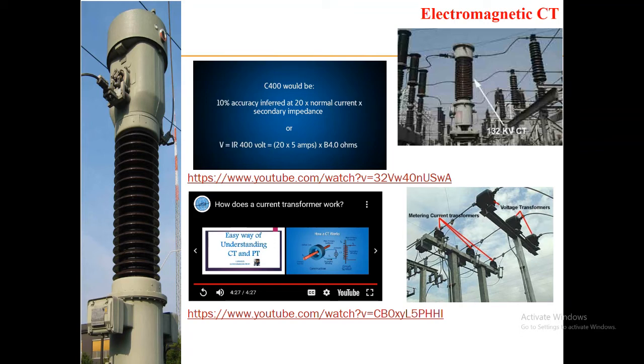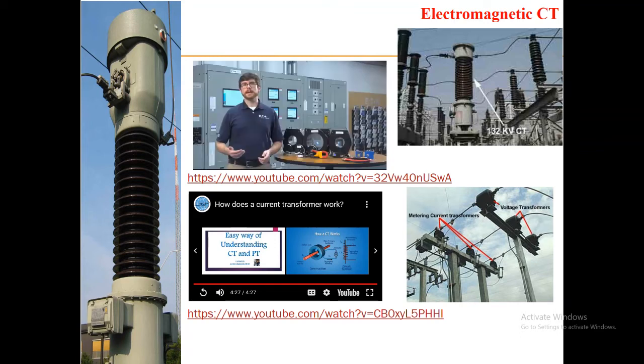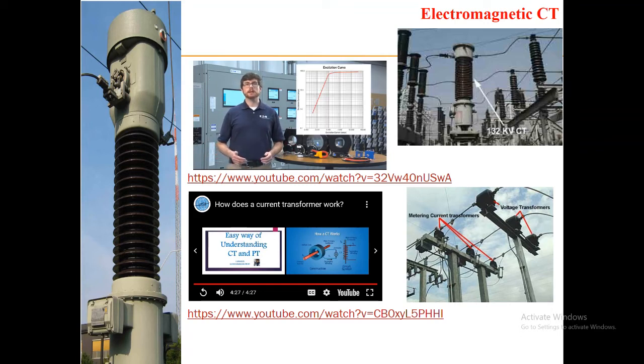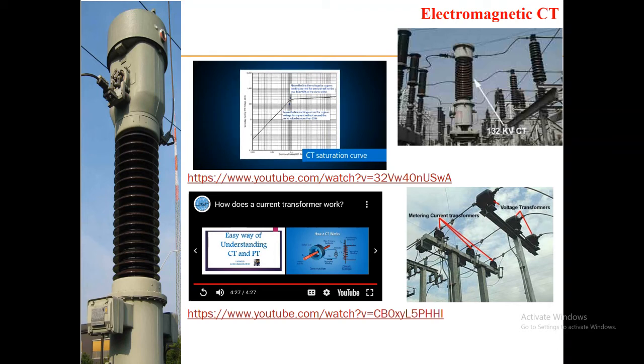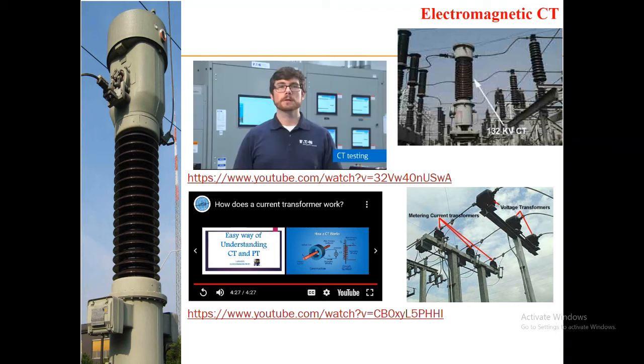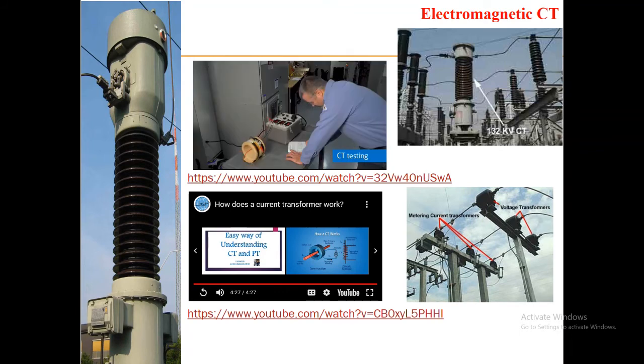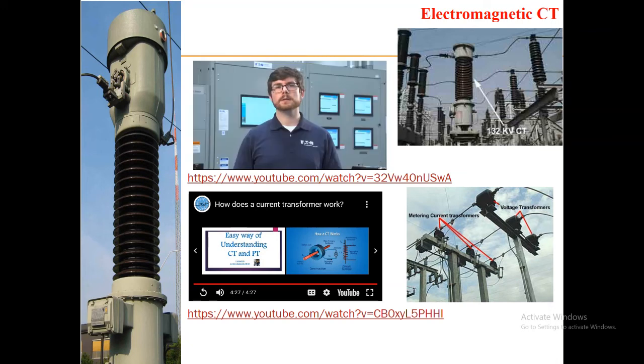A current transformer can have a range of ratings from C10 to C800, which is related to the secondary winding output voltage capabilities and VA rating of the CT. In simple terms, this means that a CT with a higher rating can sustain more burden on the secondary without saturating. For example, a C400 current transformer can have a burden that would drive a maximum of 400 volts. Based on these tables, a C400 would have an error of no larger than 10% at 20 times normal secondary current with a secondary burden of 4 ohms.